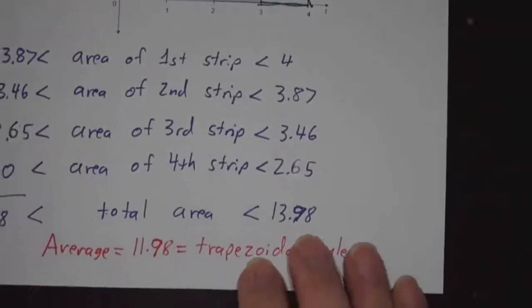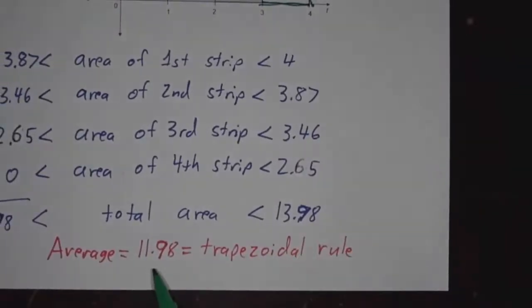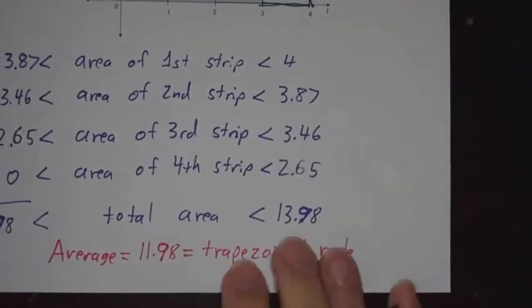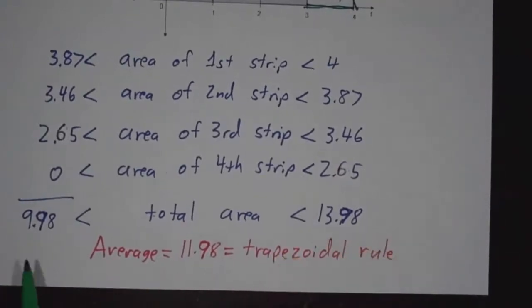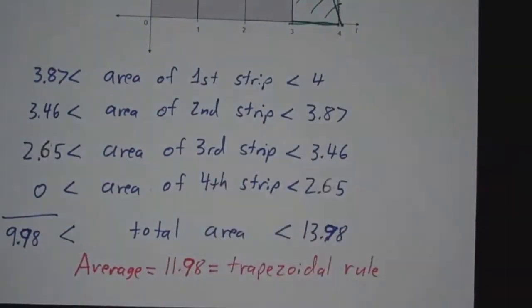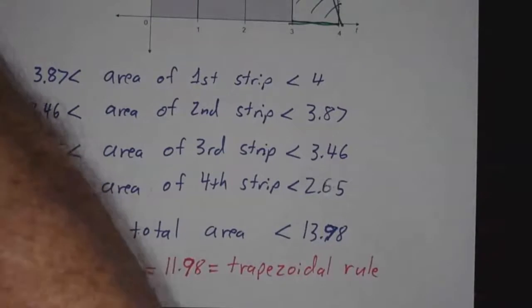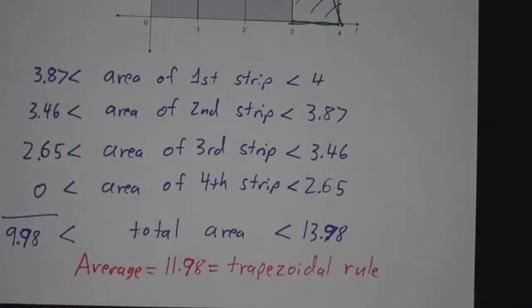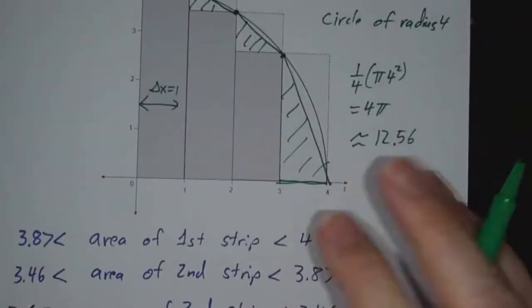So in fact, the trapezoidal rule was a pretty good approximation, not great. But it's definitely much better than using either the lower bound or the upper bound. And since this problem was identical to doing the problem of the projectile, the distance the projectile moved was actually 4 pi times 10.